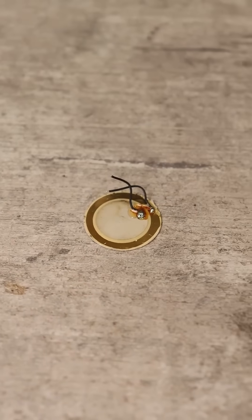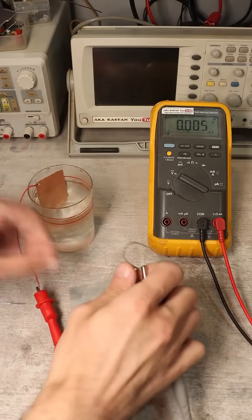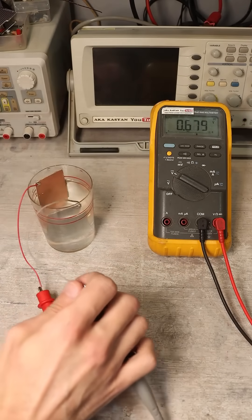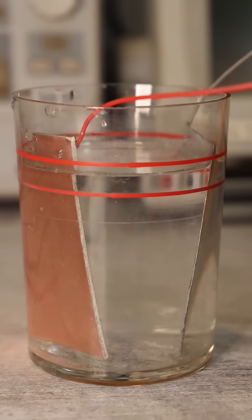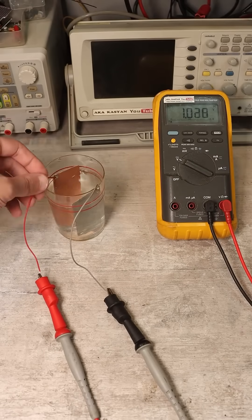If you immerse copper and zinc plates in a container with a salt solution, you will get a simple chemical source of current, more commonly known as a voltaic pile. The potential difference of such an element will average a volt.